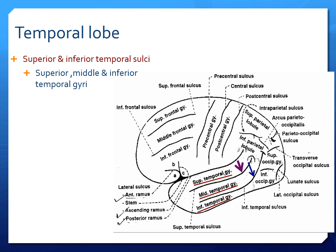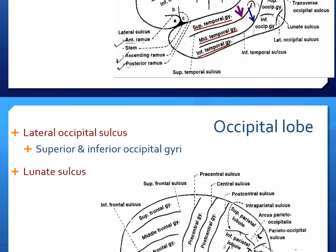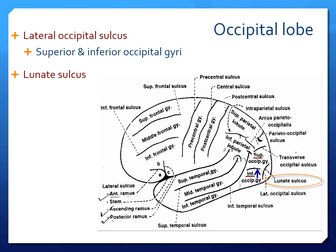On the temporal lobe, just like the frontal lobe, there are two anteroposteriorly extending sulci. Because they are two in number we call them superior and inferior; because of their location they are called superior temporal and inferior temporal sulci. So it divides the temporal lobe into three parts: superior temporal gyrus, middle temporal gyrus, and inferior temporal gyrus. On the occipital lobe there is a lateral occipital sulcus pointed with the blue colored arrow, dividing the occipital lobe into superior and inferior occipital gyrus. There is also a moon-shaped sulcus called the lunate sulcus.